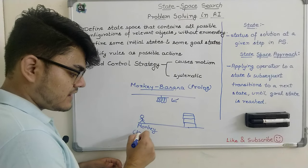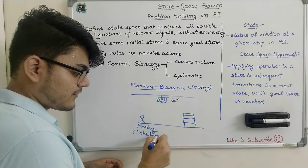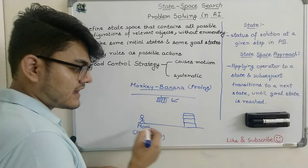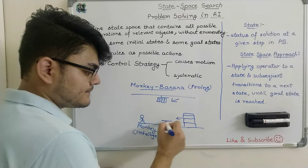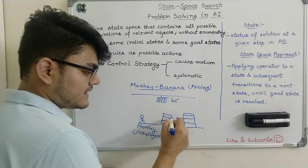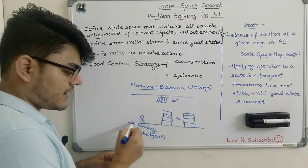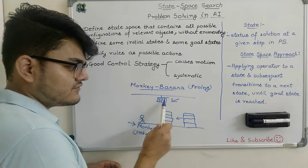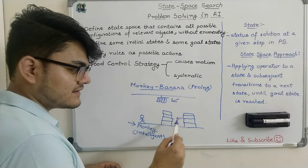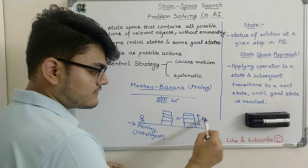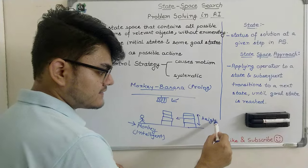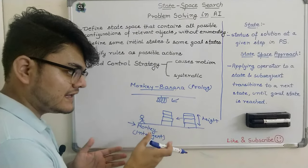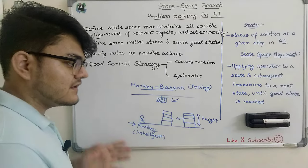The first question a human will ask is whether the monkey is intelligent or not. Let's say it is given that the monkey is intelligent and he can move these stacks. Now he moves the stacks. The second question that will come to mind is whether the monkey will be able to reach the bananas on the roof — whether the height of the stack is enough to reach the bananas. Let's say the monkey is intelligent enough to stack them up and will also be able to reach the bananas because the height is sufficient.